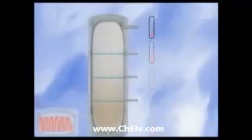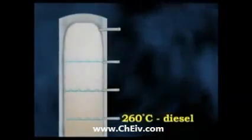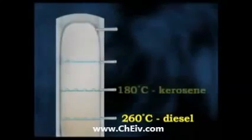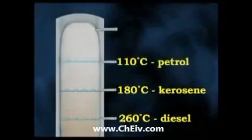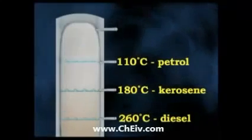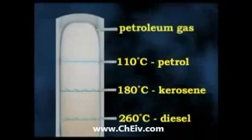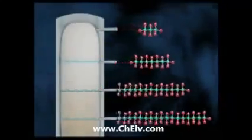The precise details differ at every refinery and depend on the type of crude oil being distilled. But at around 260 degrees Celsius, diesel condenses out of the gas. At around 180 degrees, kerosene condenses out. Petrol or gasoline condenses out at around 110 degrees, while petroleum gas is drawn off at the top. The distilled liquid from each level contains a mixture of alkanes, alkenes and aromatic hydrocarbons with similar properties, and requires further refinement and processing to select specific molecules.